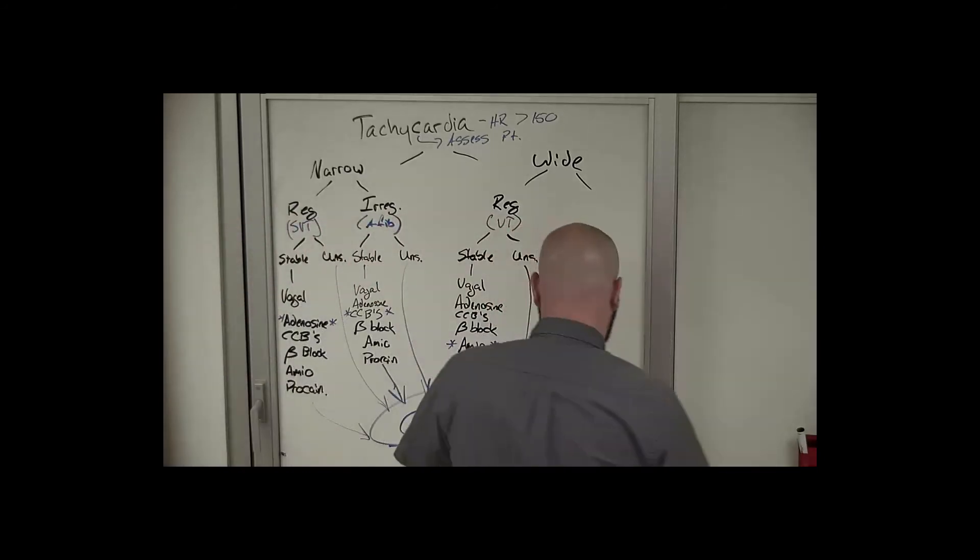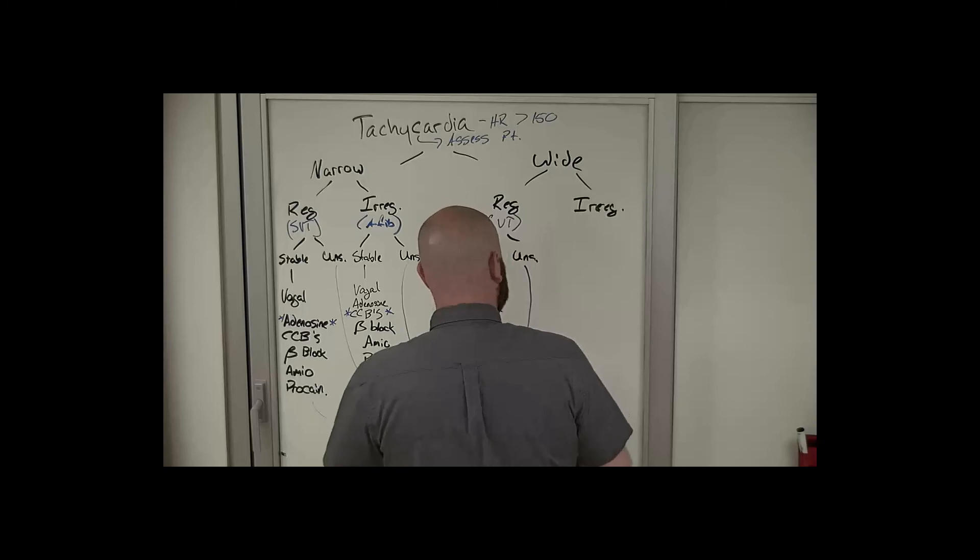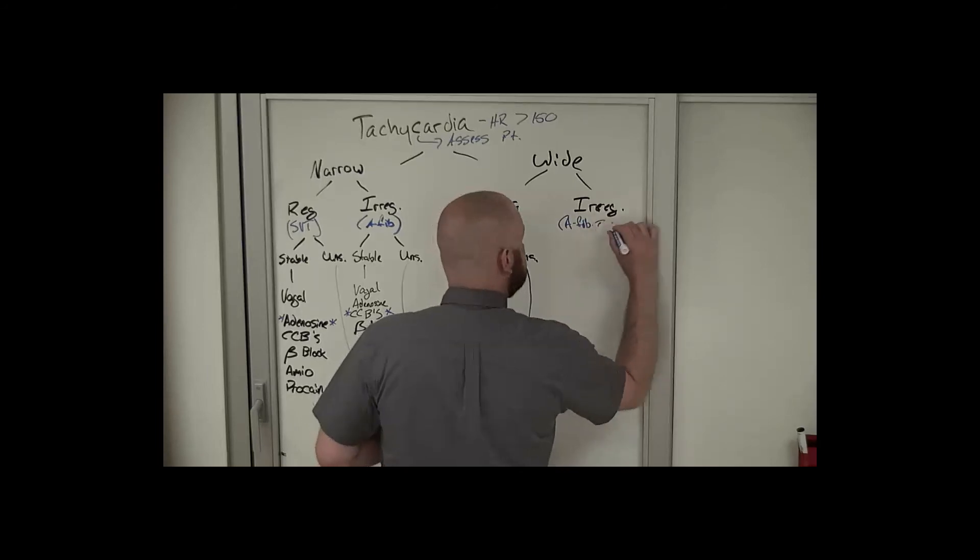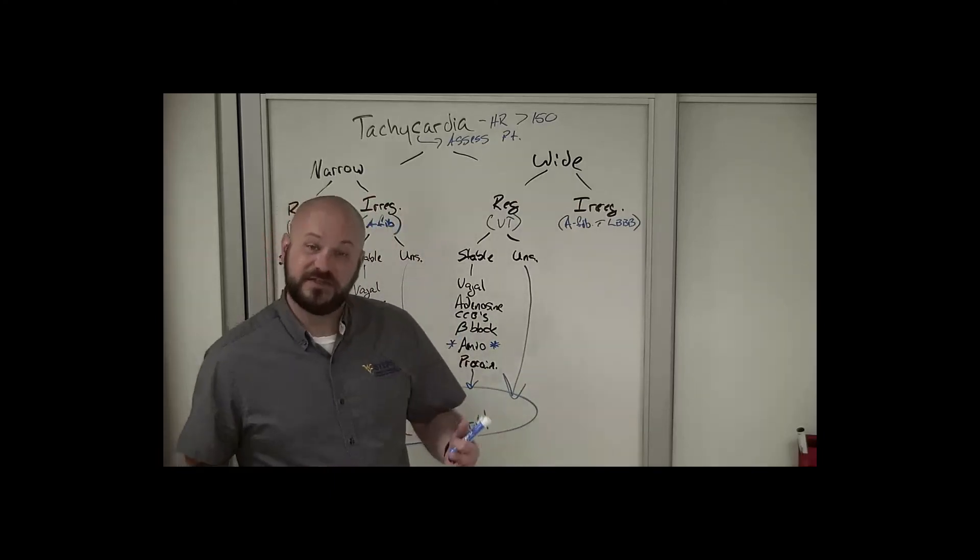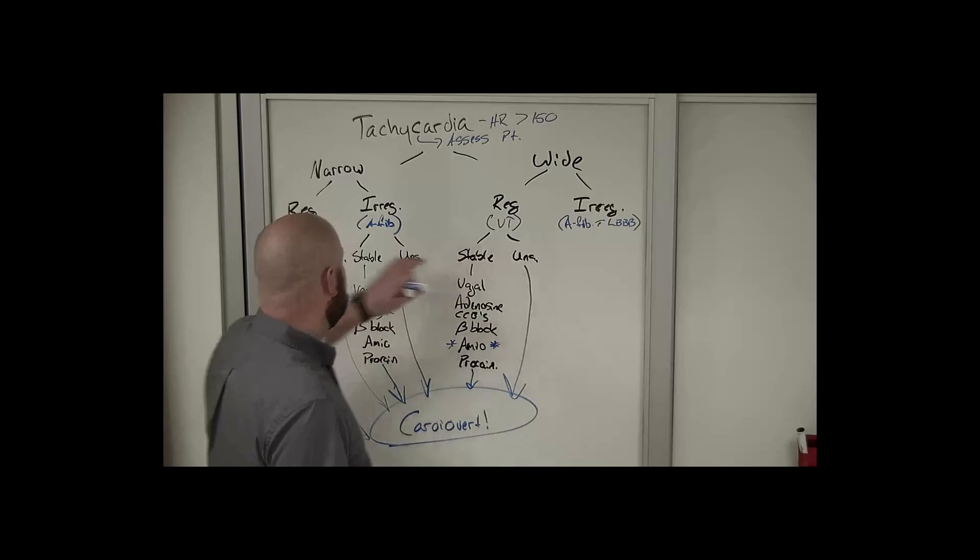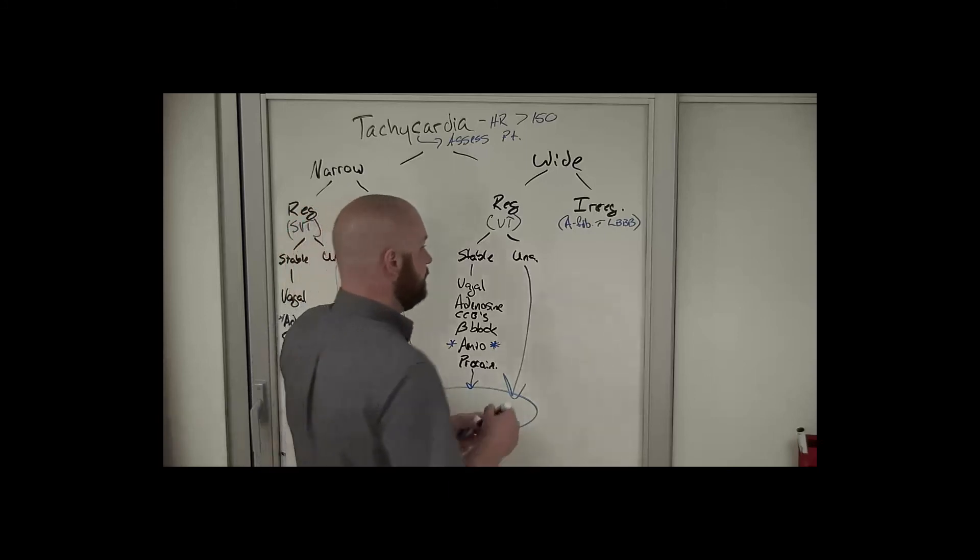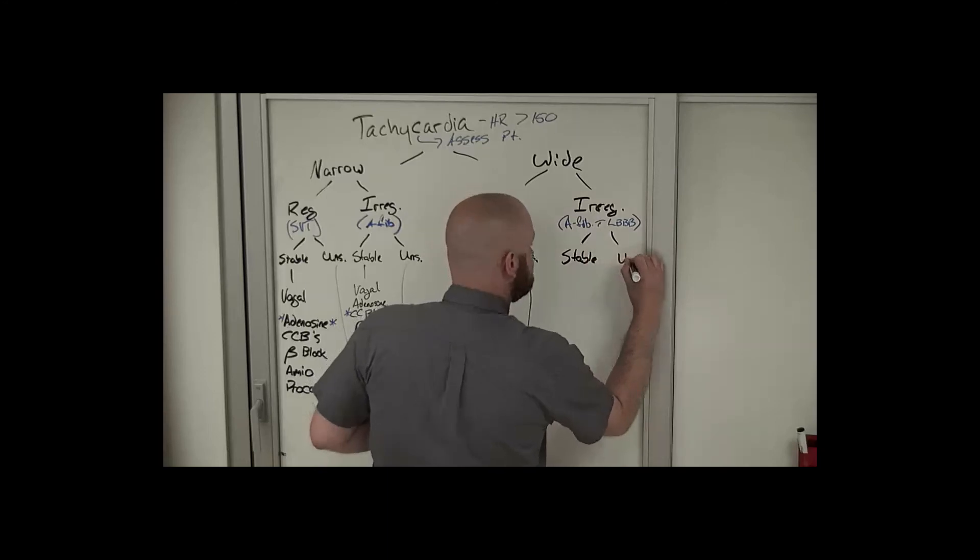All right, so our last category is wide and irregular. Now this is classically AFib with aberration. What is AFib with aberration? Well, aberration is a fancy way of saying a left bundle branch block. So this is typically an AFib patient who has a concurrent left bundle branch block. However, there's a concern here if this patient has an antidromic or backwards Wolff-Parkinson-White pathway.